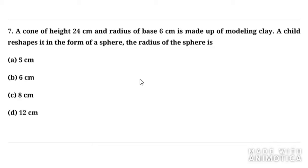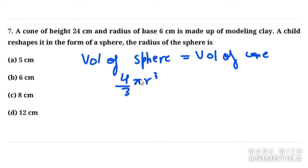So that means volume of sphere equals volume of cone according to this question. Now volume of sphere is 4 by 3 pi r cube and volume of cone is 1 by 3 pi r square h.